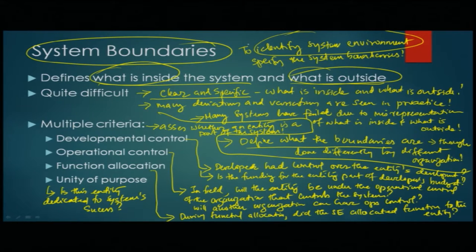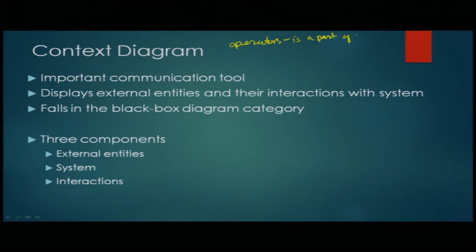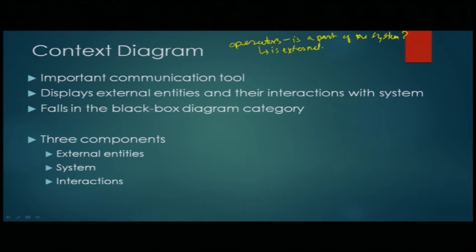Before we get into the context diagram, we also need to think about a few things. The first aspect is operators. They are an important part of the system. The question usually is whether the operator is part of the system. The answer is that the operator is external, though some organizations consider them internal. Most of the time, operators are considered external to the system, because there is no way you can control the operator as such.